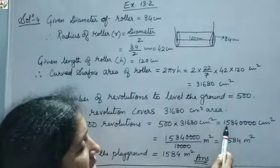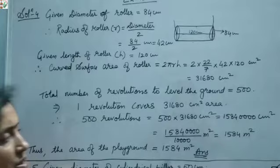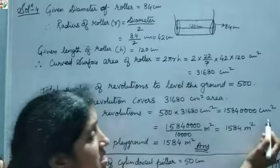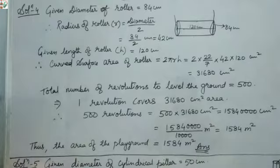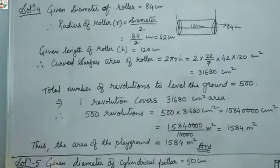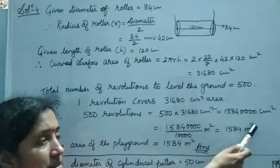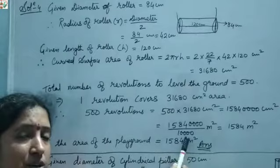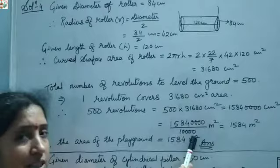That gives 1,58,40,000 cm². Since land is measured in square meters, we need to convert. We know 1 meter = 100 cm, so for square units we divide by 100 × 100 = 10,000.